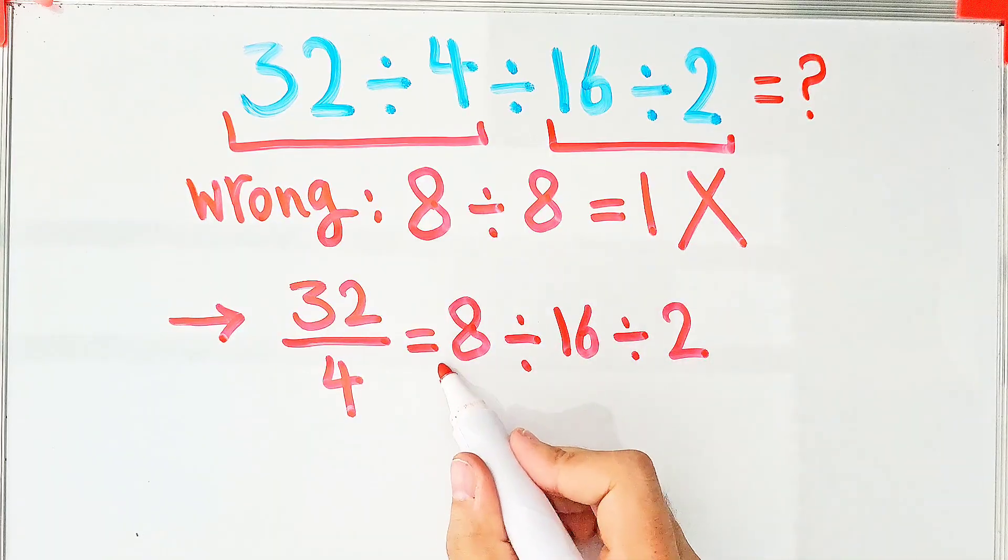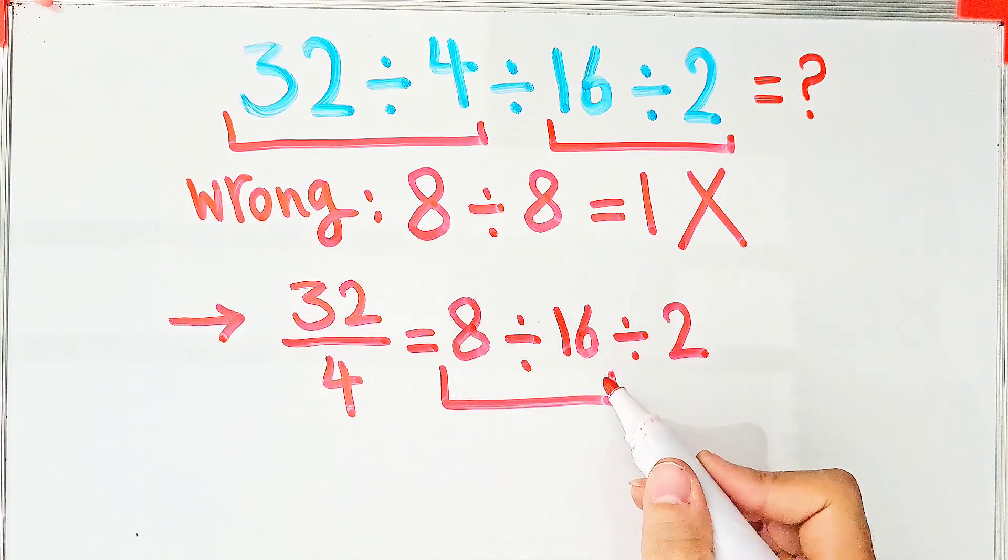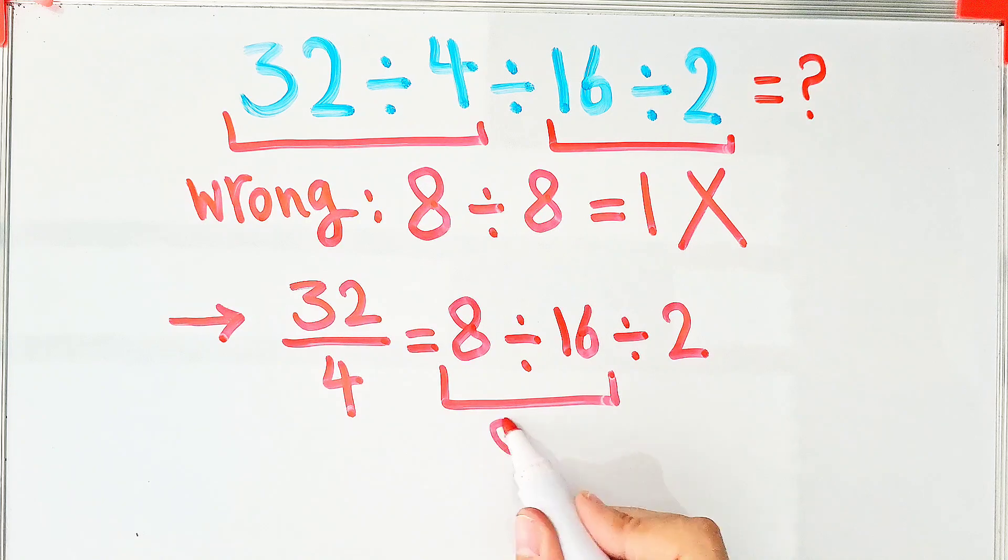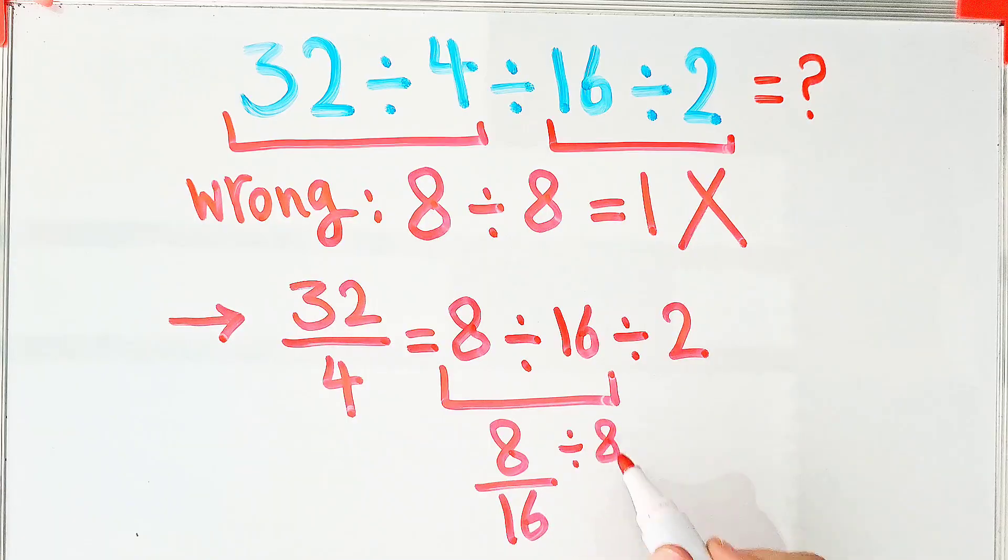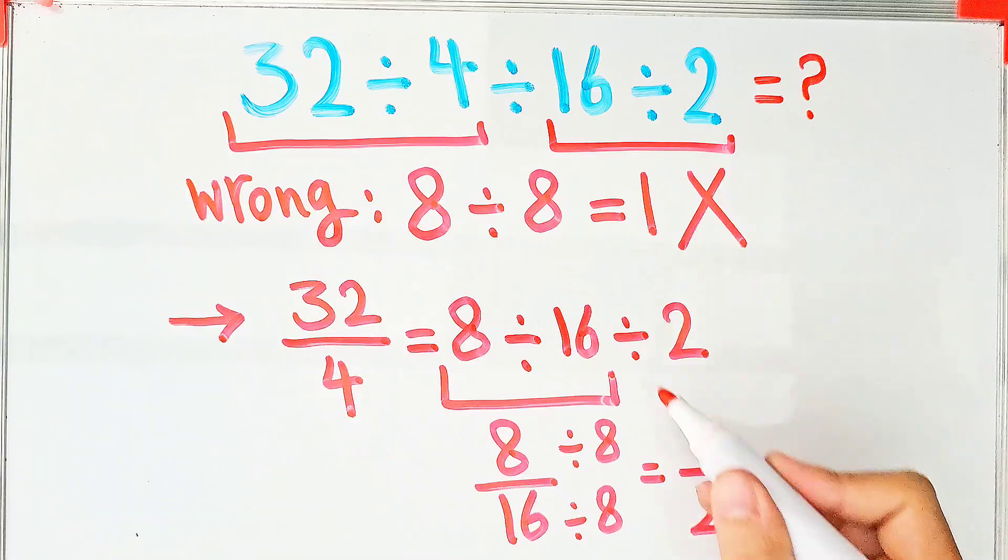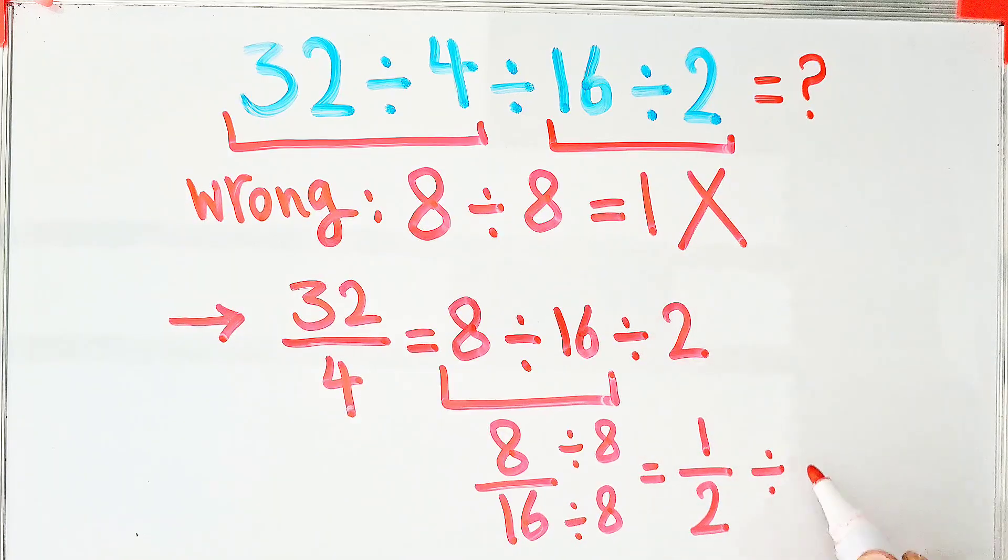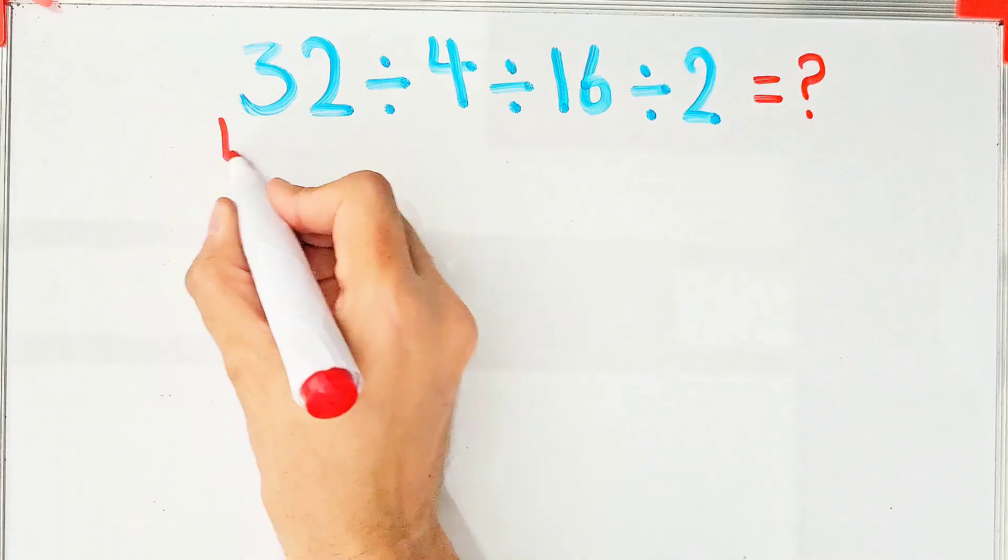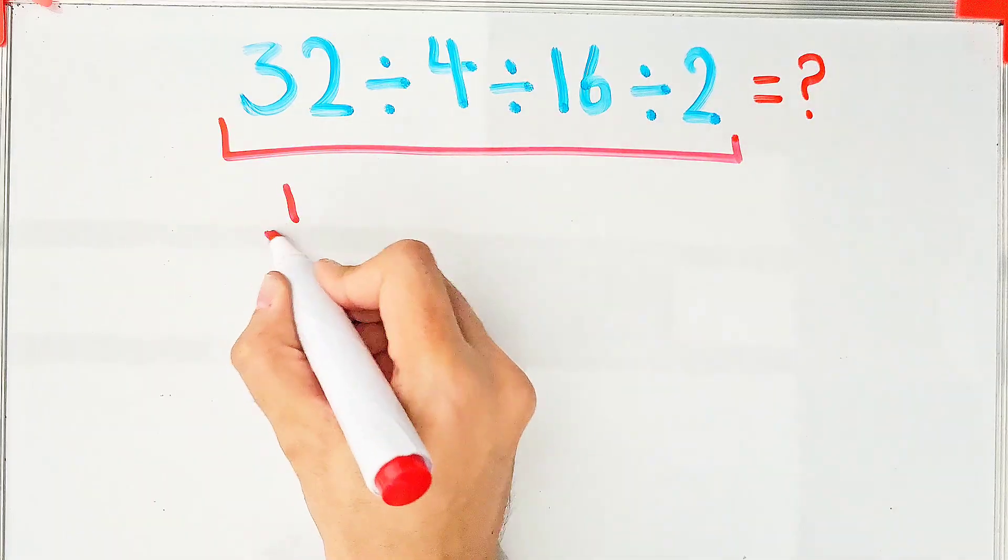We have 2 divisions and we start from the left and simplify: 8 divided by 16 equals 8 over 16. And because the numerator and the denominator of this fraction are divisible by 8, we divide both by 8. We have 1 over 2 divided by 2. The simplified answer for this part equals 1 over 2 divided by 2.